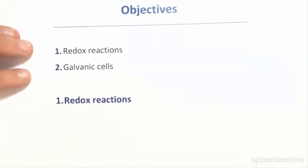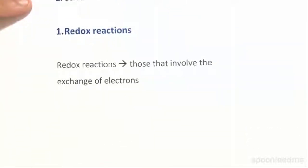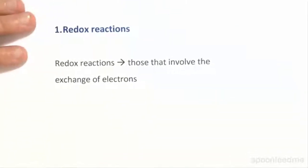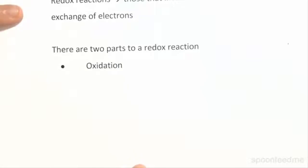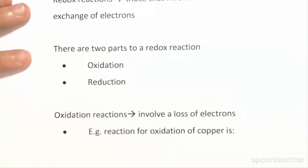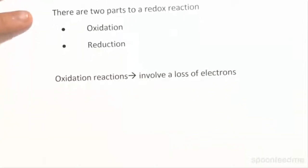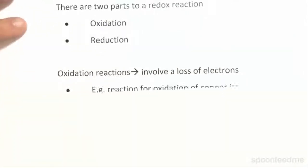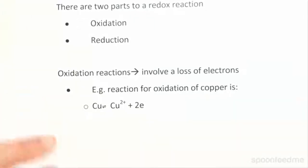Redox reactions are those that involve the exchange of electrons. There are two parts to a redox reaction: oxidation and reduction. Oxidation reactions involve a loss of electrons. For example, if we're looking at the oxidation of copper, this is going to be copper going to a copper ion plus two electrons — so we've lost electrons.